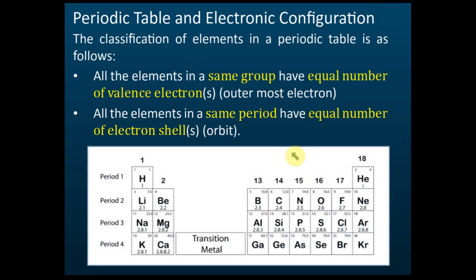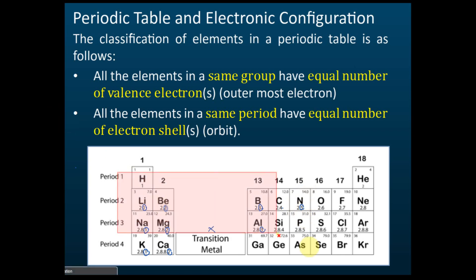From here we can see the electronic configurations or electron arrangements. Elements with one valence electron are placed in Group 1, two valence electrons in Group 2, three valence electrons in Group 13. Transition metals from Group 3 to 12 will be discussed later. Group 14 has four valence electrons, Group 15 has five valence electrons, and so on.